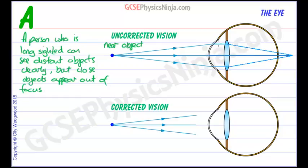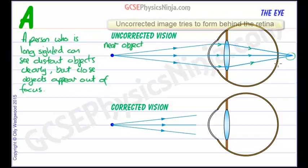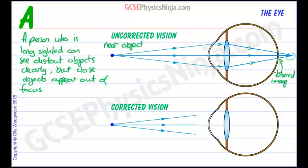But in the case of long sighted, these rays don't converge enough. It might be because the eyeball is too short or it might be because the eye lens is not powerful enough. But the image that's formed, well it's trying to be formed behind the retina. So we'll get a blurred image here, a blurred image because the rays of light are not coming to a point, not coming to a focus.